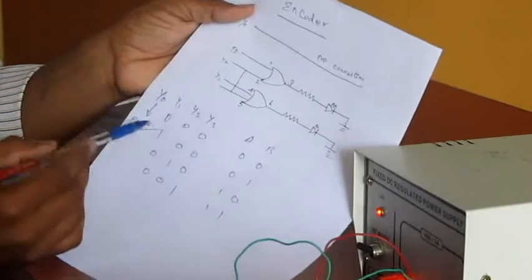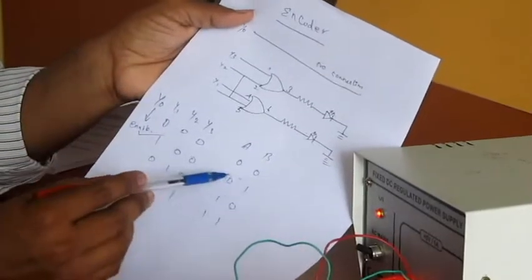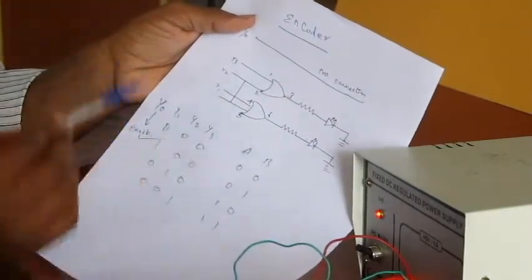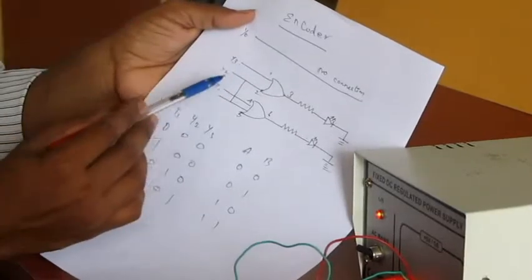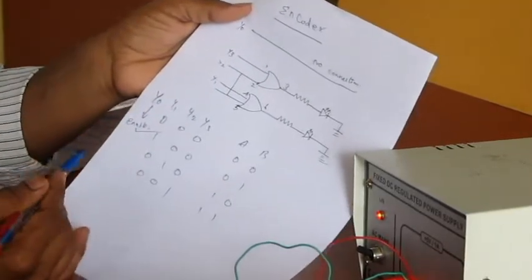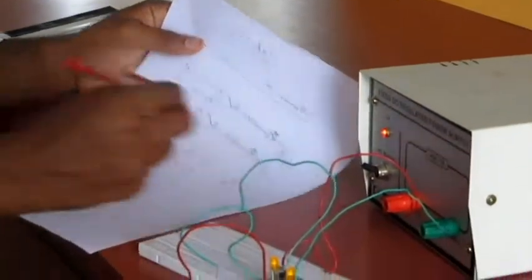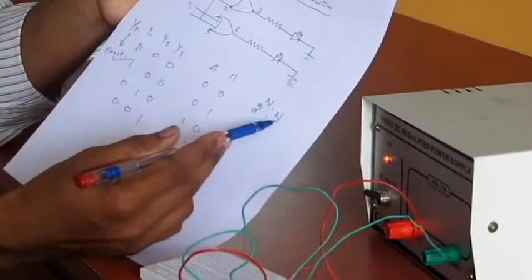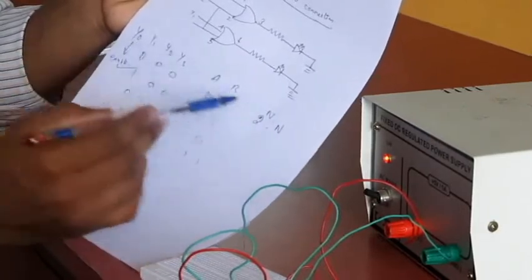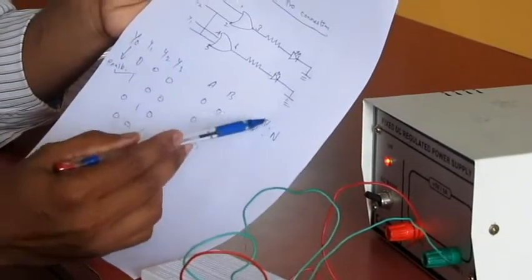Depending upon which input is selected, you will be getting a corresponding unique code at the output set. So this is the simple 4 to 2 encoder. We know that encoder is 2 power N to N input and N output. So we have N encoder 2, so totally we have 4 inputs and 2 outputs.